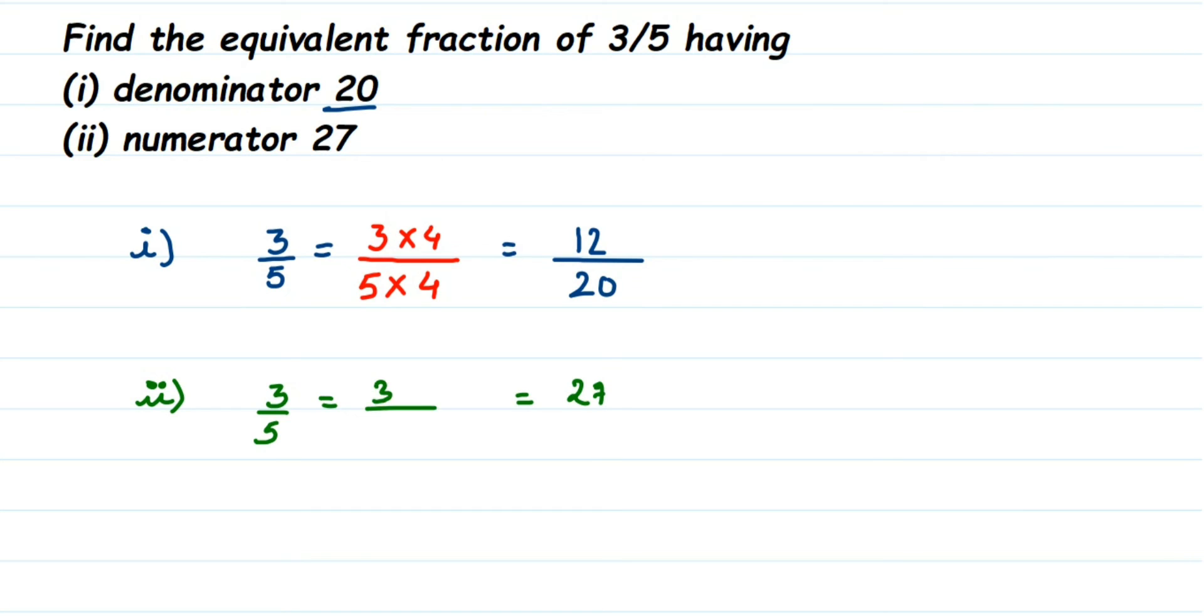So 3 by 5, with 3 what you should multiply to get 27? It is 9, right. 3 times 9 is 27. So same 9 you multiply in the denominator. So 9 times 5 is 45. So in the denominator we will get 45. So this is the required fraction.